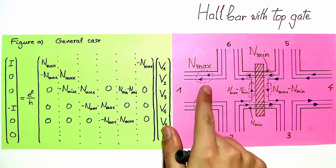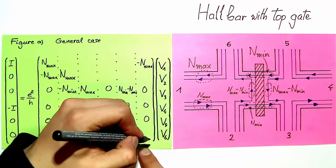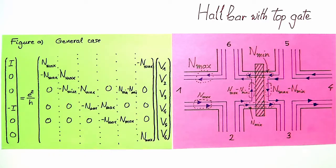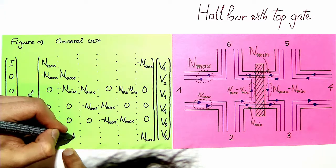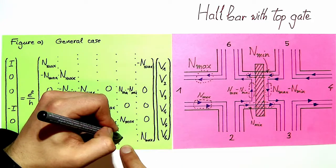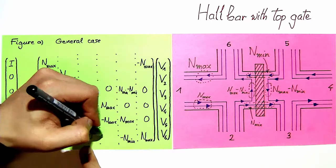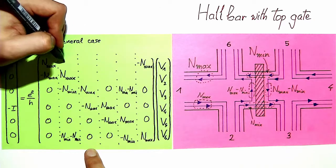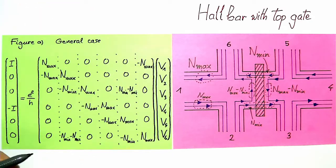And at contact 6 the situation is similar to 3 with n_max supported by contact 6, n_max minus n_min from 2, n_min from 5, and no other contributions to the transmission matrix. So here I complete the zeros and we have the full transmission matrix.